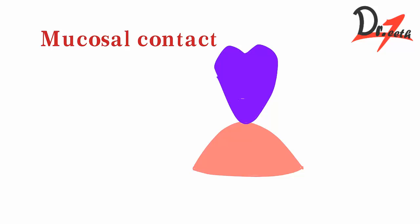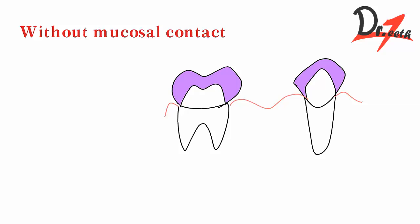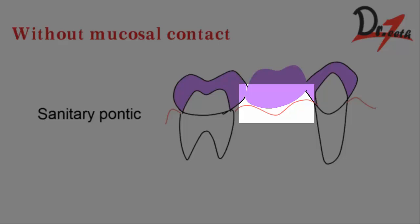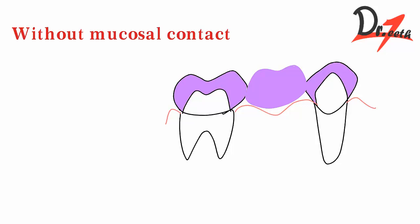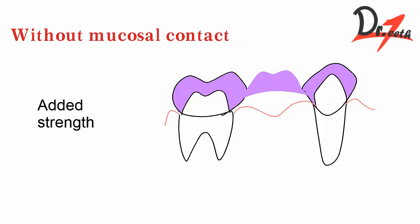Without mucosal contact, it is of two types. The sanitary or hygienic pontic makes no contact with the residual ridge, hence there is minimal chance of inflammation. The occluso-gingival thickness of the pontic should be greater than 3mm and there should be adequate space under it to facilitate cleaning. The modified sanitary pontic is an alternative design in which there is mesiodistal concavity — the undersurface is convex, providing added strength to the connectors while at the same time allowing space for easier cleansing.